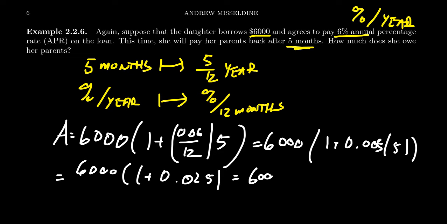Then times that by 6,000. That would end up with $6,150. That's how much money she would have to pay back if she paid her parents back after five months.